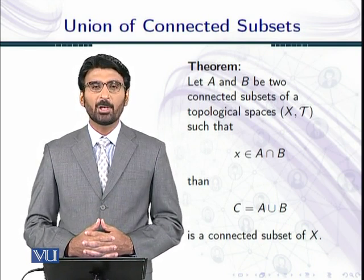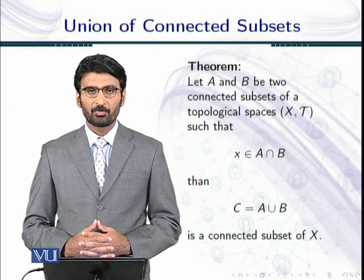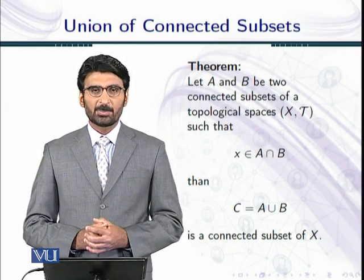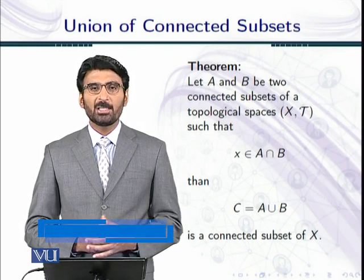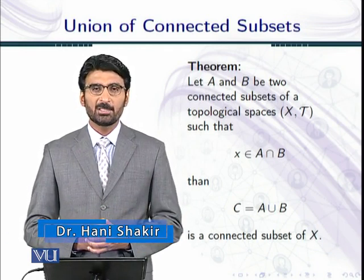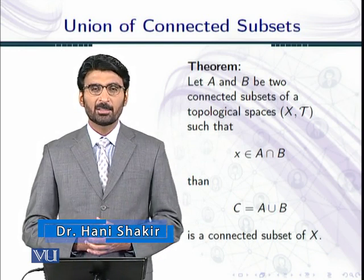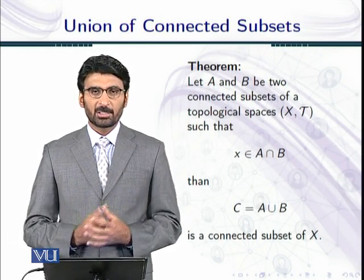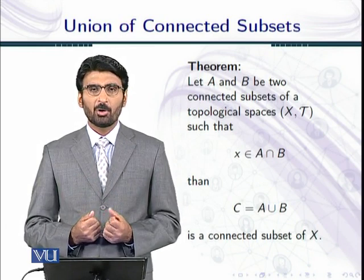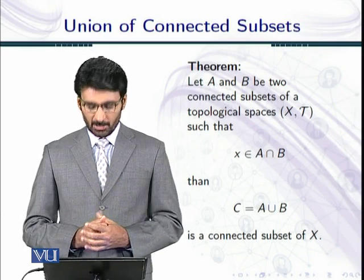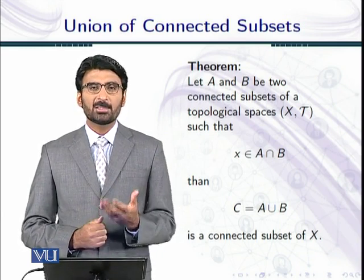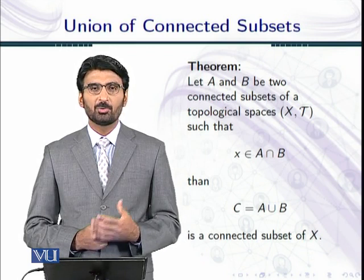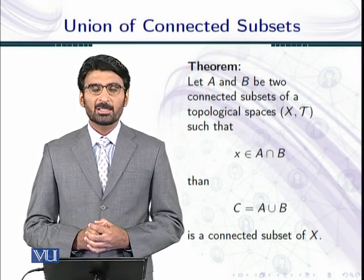Let A and B be two connected subsets of a topological space X tau, such that there is a common point in A and B — that is, there exists a point x that belongs to A intersection B. Then C, the subset of X equal to A union B, is again a connected subset of X.